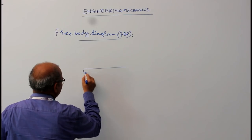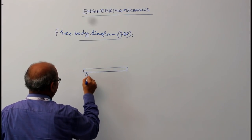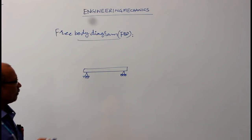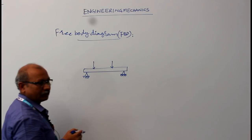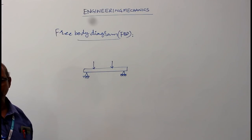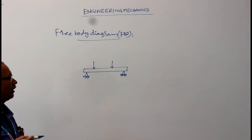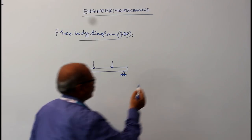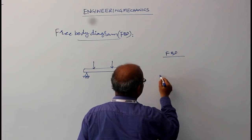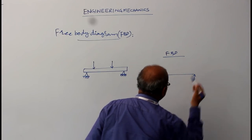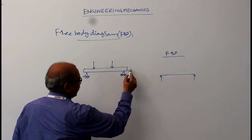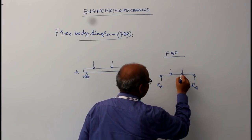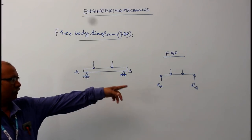Suppose, see this — this is a simply supported beam and this simply supported beam is carrying certain loads. To evaluate the resultant of these two forces, or to find how the beam is stationary, we have to remove these supports and replace them by their reactions. So the free body diagram of this beam is like this. These are the two support reactions. If these ends are A and B, then this is the reaction at A and this is the reaction at B, and these are the two loads acting on it.